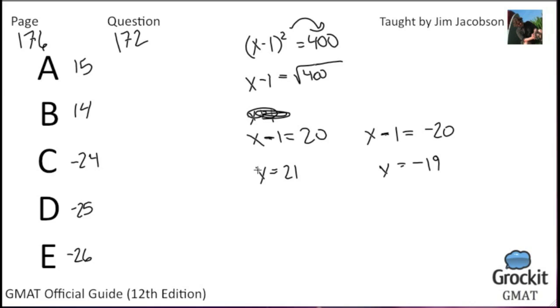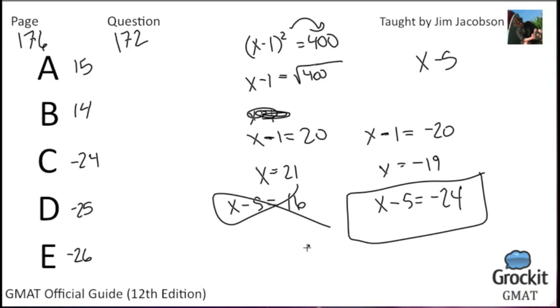Of course, that's not what the question is asking. The question is asking what the possible values are of x minus 5. So x minus 5, we subtract another 5, we get 16. Here, x minus 5 equals negative 24. 16 is not given as one of the answer choices, but negative 24 is. And there we have it, answer choice C.